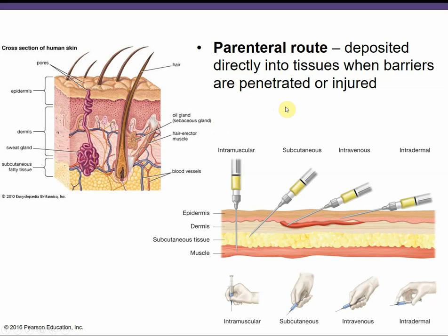When we talk about the parenteral route, this is when the microbe or infection has been deposited directly into the tissues — when those barriers have been penetrated or injured. Things like punctures, injections, bites, cuts, and surgery — anything that damages the skin barrier where microbes can gain entry.